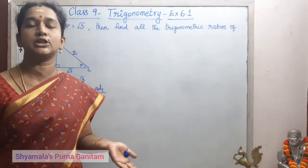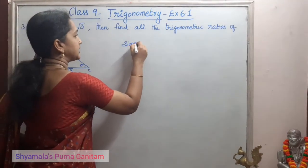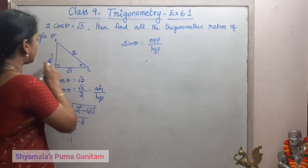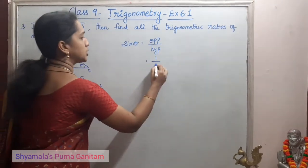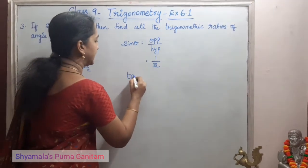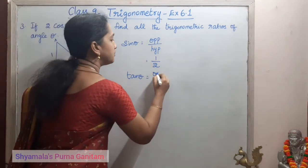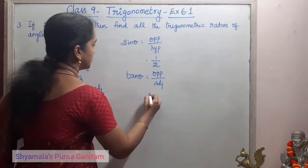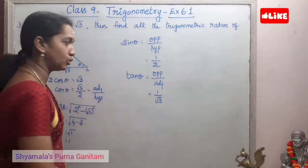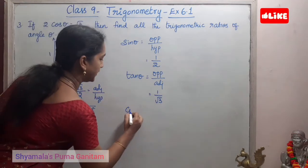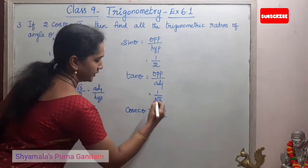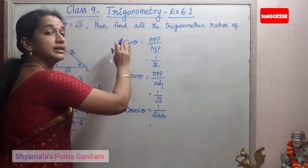Now we can find the ratios. Starting with sinθ: sine is opposite by hypotenuse, so sinθ = 1/2. Cosθ is already given. For tanθ: tan is opposite by adjacent, so tanθ = 1/√3. For cosecant: cosecθ is the reciprocal of sinθ, so cosecθ = 2.